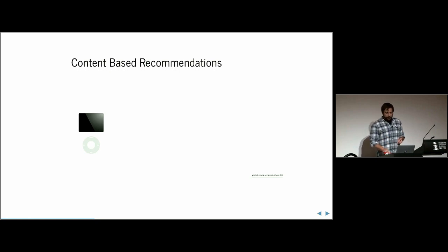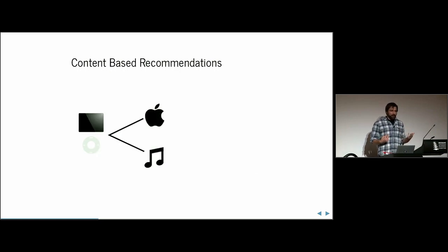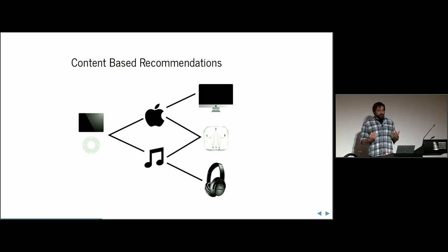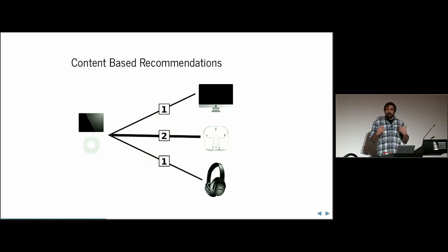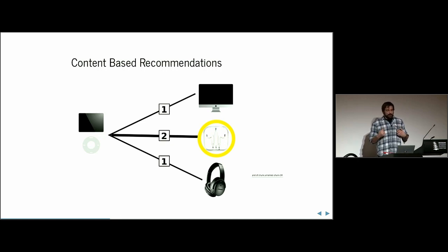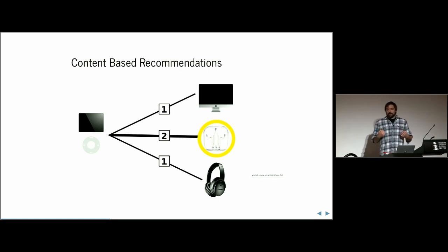Here's a quick-and-dirty recommendation system. Say we have a buyer who just bought an iPod. An iPod is an Apple product and a musical product. Other products in our inventory that share these attributes include the Apple computer, Apple earbuds, and Bose musical earphones. All of them share something in common with the iPod, but the Apple earbuds have the most in common. By aggregating the common attributes to create a weighted graph, we can recommend the Apple earbuds to the iPod buyer. That's content-based recommendation.